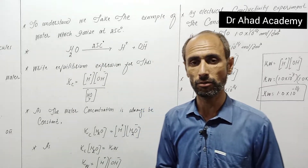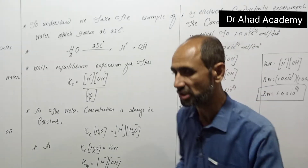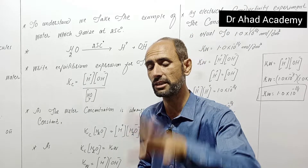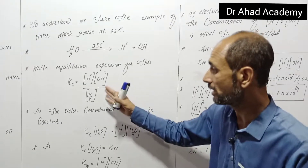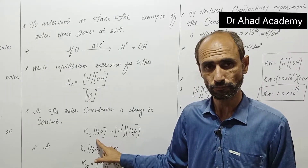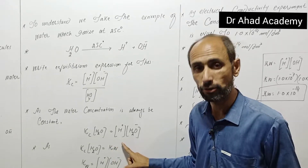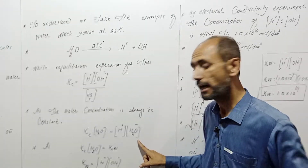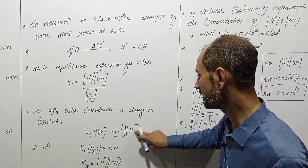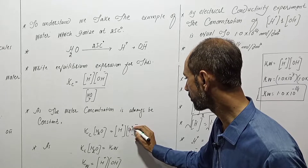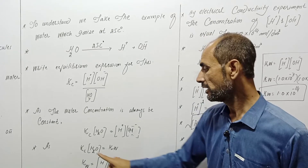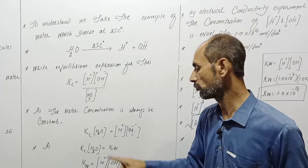Since water concentration is constant at constant temperature, we define Kw — the ionization constant of water — as Kw equals [H+] times [OH-]. This gives us the equilibrium expression: Kc of water equals [H+][OH-].